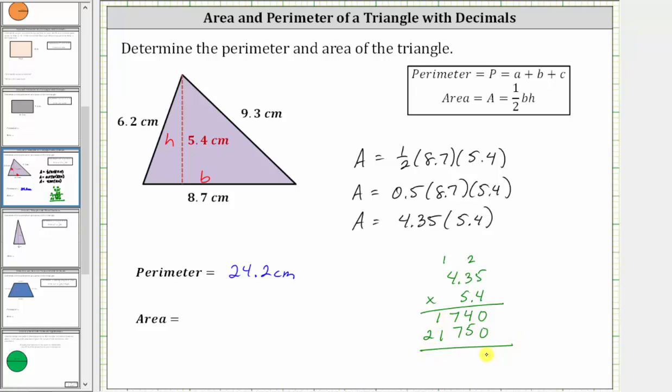Now we add. Here we have seven plus seven, which is 14. Record the four, perform an exchange. We have one plus one plus one, which is three. And then we have a two. Again, the product must contain three decimal places, and therefore the product is 23.490.